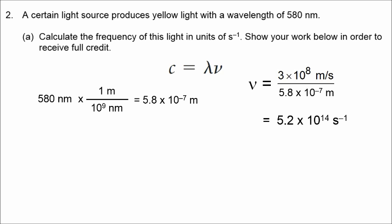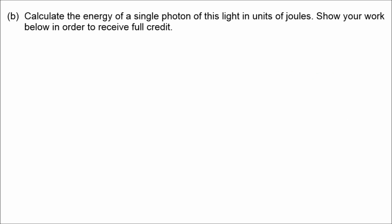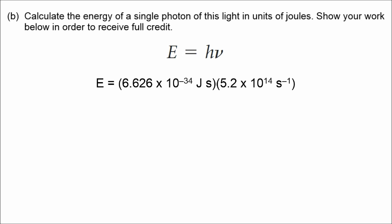In part B, we calculate the energy of a photon using E equals Planck's constant times frequency. Multiplying Planck's constant by 5.2 times 10 to the 14th hertz gives a value of 3.4 times 10 to the negative 19 joules per single photon.